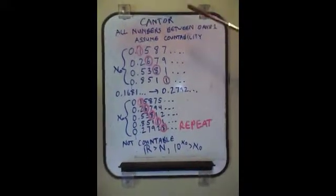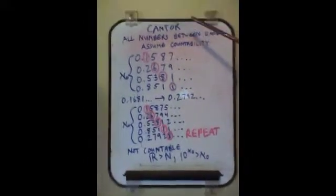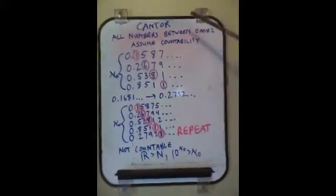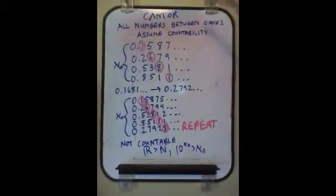We're going to further review what Cantor has already established. We're going to review his argument that the countability of the real numbers is greater than the countability of natural numbers.